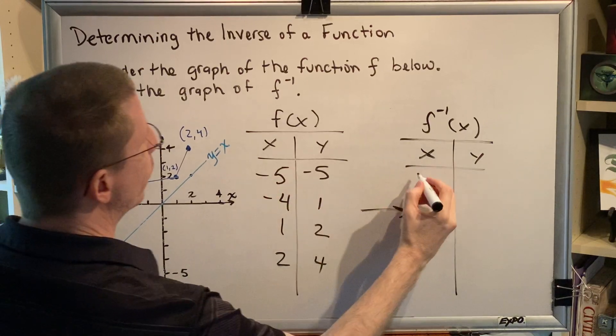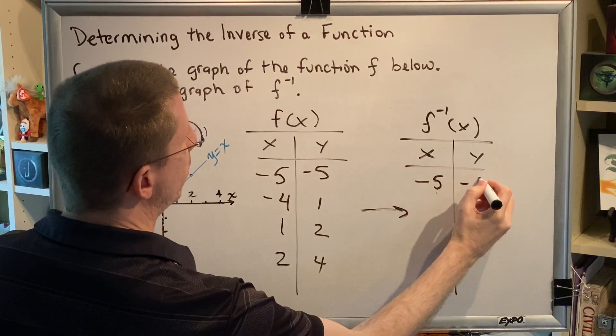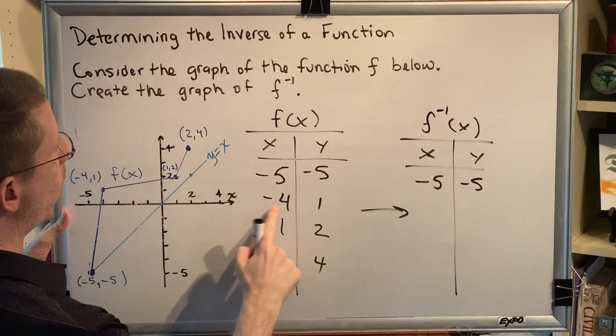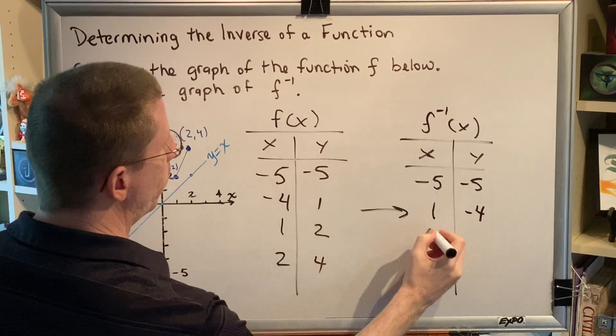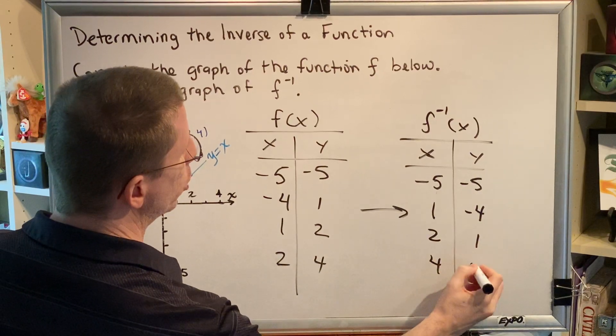So when we swap negative 5, negative 5, it turns out to be the same, negative 5, negative 5. When we swap negative 4, 1, we get 1, negative 4. 1, 2 becomes 2, 1. 2, 4 becomes 4, 2.